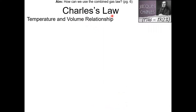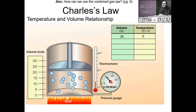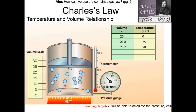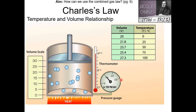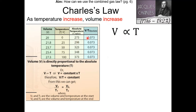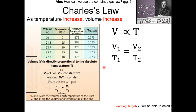The next gas law is Charles' law, which deals with the temperature and volume relationship, assuming pressure is constant. We apply heat to a cylinder with a movable piston, increasing the temperature. As temperature increases, gas molecules move faster, apply more force inside the container, and push the piston up, increasing the volume. So temperature and volume have a direct relationship — volume is directly proportional to temperature. Volume over temperature in Kelvin gives a constant: V1 over T1 equals V2 over T2.